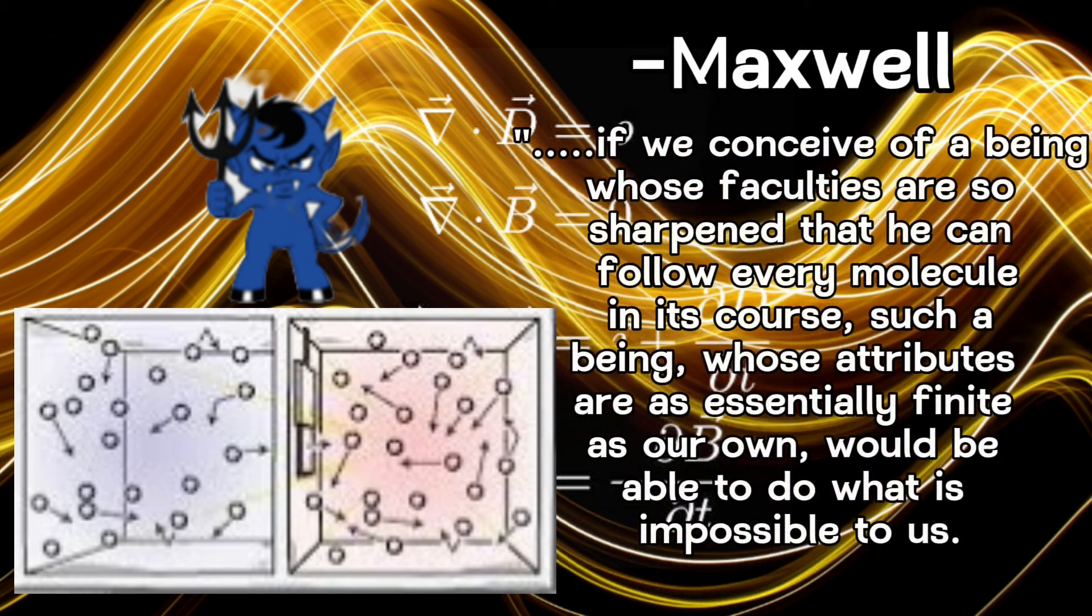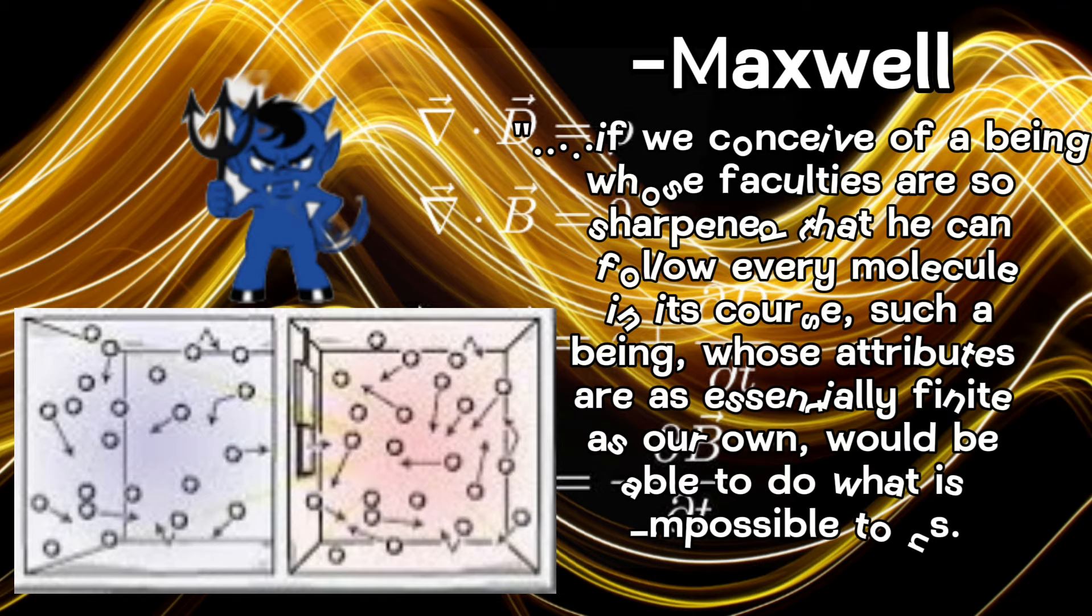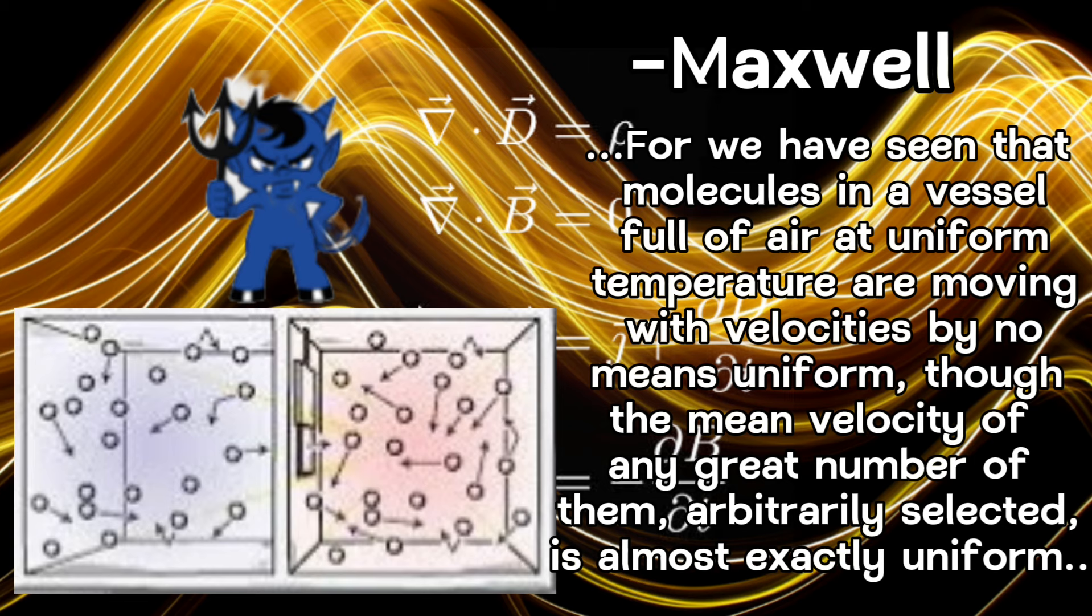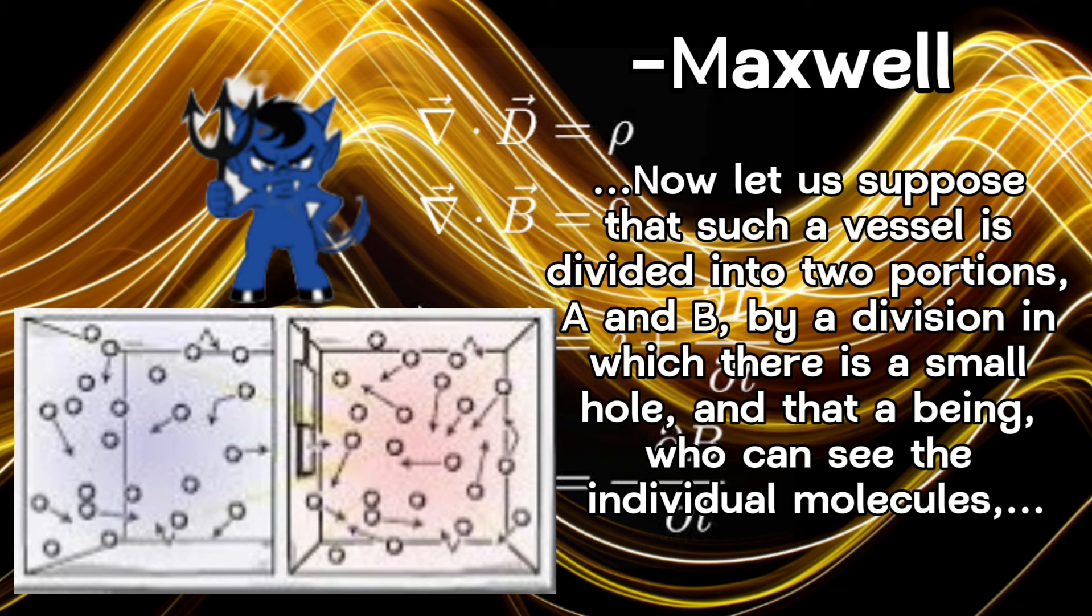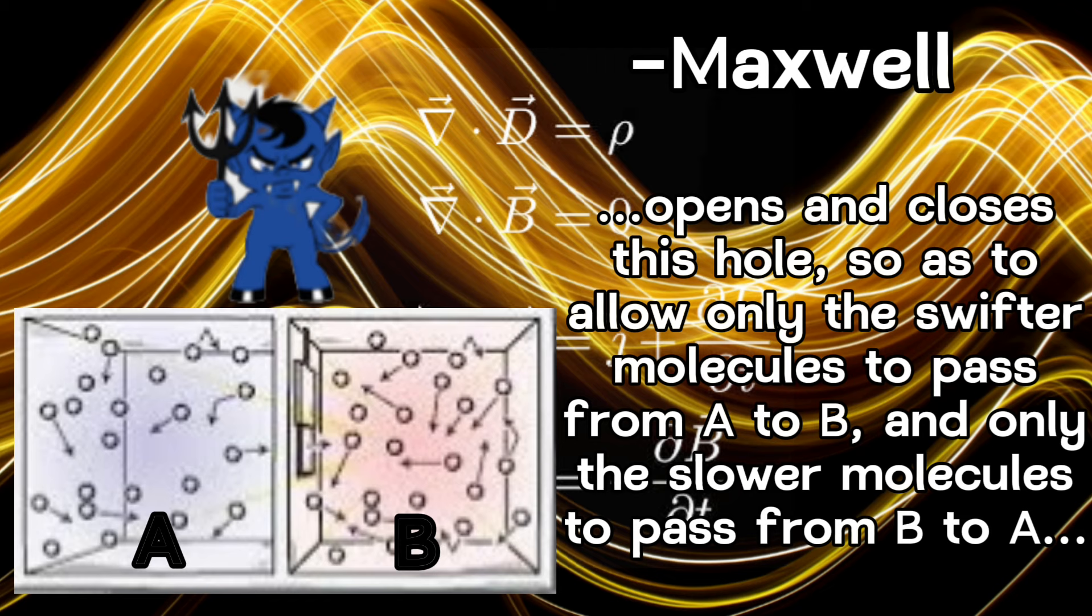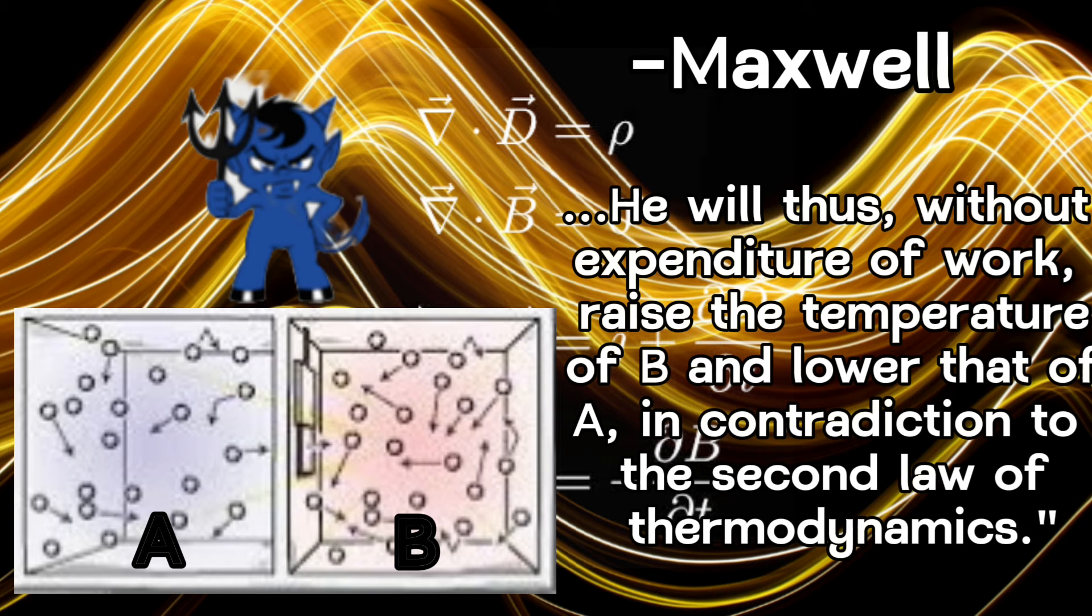If we conceive of a being whose faculties are so sharpened that he can follow every molecule in its course, such a being, whose attributes are as essentially finite as our own, would be able to do what is impossible to us. For we have seen that molecules in a vessel full of air at uniform temperature are moving with velocities by no means uniform, though the mean velocity of any great number of them, arbitrarily selected, is almost exactly uniform. Now let us suppose that such a vessel is divided into two portions, A and B, by a division in which there is a small hole, and that a being who can see the individual molecules opens and closes this hole, so as to allow only the swifter molecules to pass from A to B, and only the slower molecules to pass from B to A. He will thus, without expenditure of work, raise the temperature of B and lower that of A, in contradiction to the second law of thermodynamics.